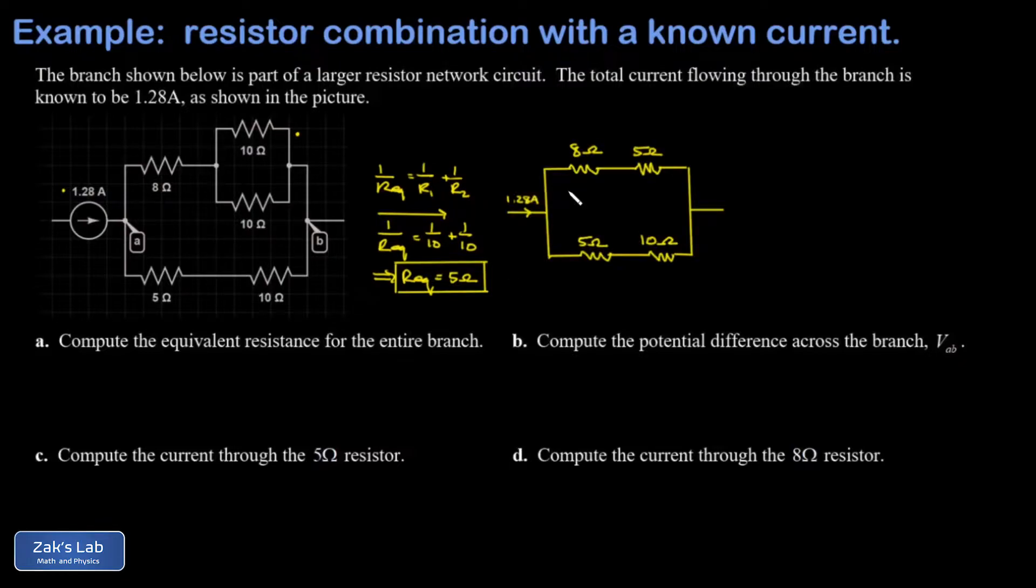Now we're looking at two different series combinations, and resistors in series simply add. So the equivalent resistance for the upper branch is 13 ohms, that's just 8 plus 5. In the lower branch it's 15 ohms. Finally, we're looking at a parallel combination of a 13 ohm resistor and a 15 ohm resistor. We take 1 over 13 plus 1 over 15 and take the reciprocal of the result. This gives us an equivalent resistance of 6.96 ohms.